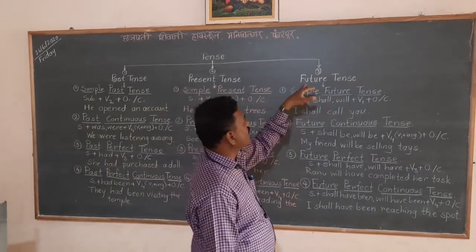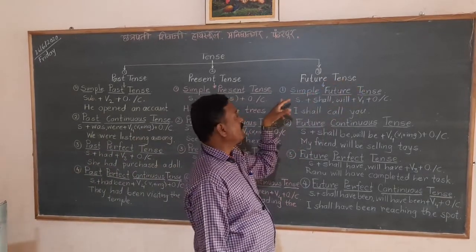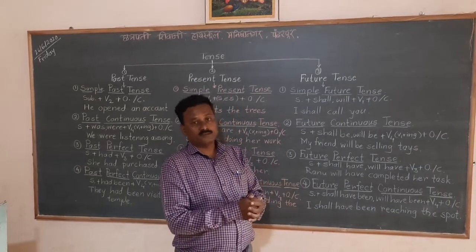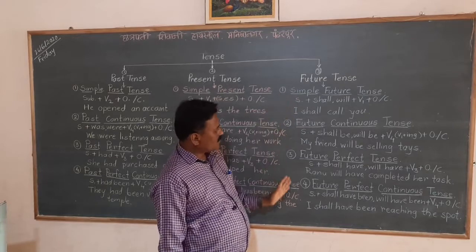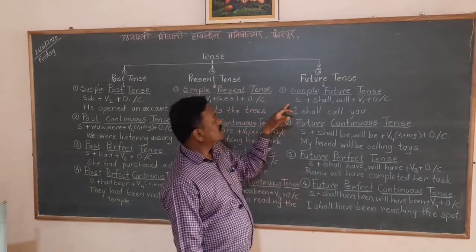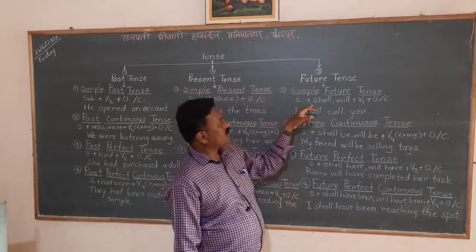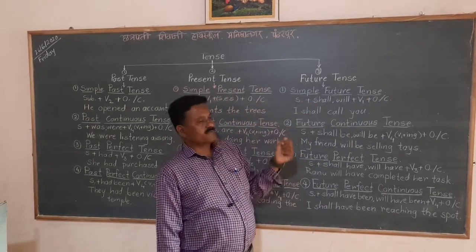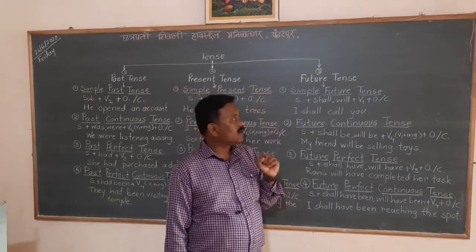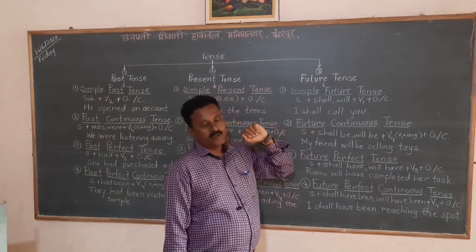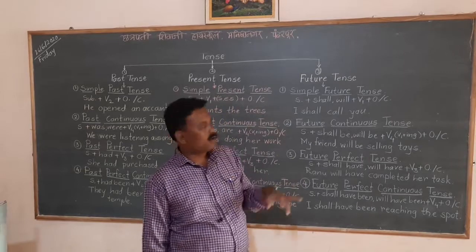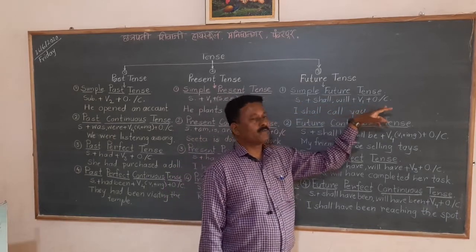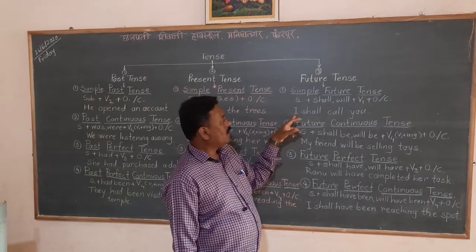Now the third main tense: future tense — what will happen after this moment. There are four sub-kinds. First, simple future tense: the formula is subject plus shall/will plus V1 plus object or complement. When the subjects are I and we, we use 'shall'; for all other subjects we use 'will'. Example: 'I shall call you.'